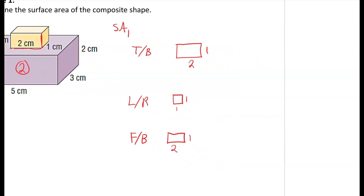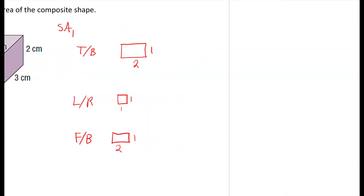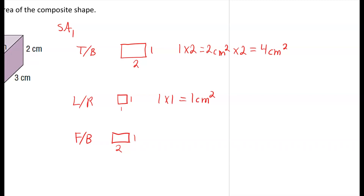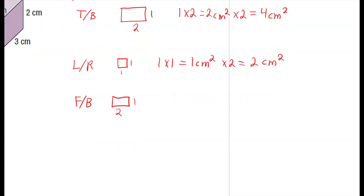Now we have the dimensions and can calculate. One times two equals 2 centimeters squared; there's a front and a back so multiply by 2 to get 4 centimeters squared. For the left and right: 1 multiplied by 1 equals 1 centimeters squared, times 2 equals 2 centimeters squared. For the front and back: 1 multiplied by 2 equals 2 centimeters squared, times 2 equals 4 centimeters squared.